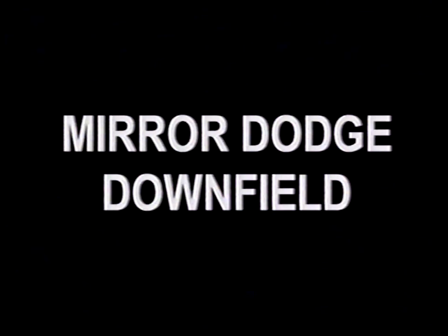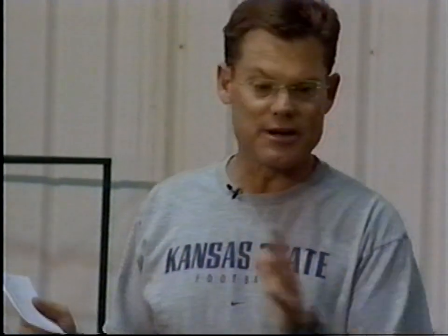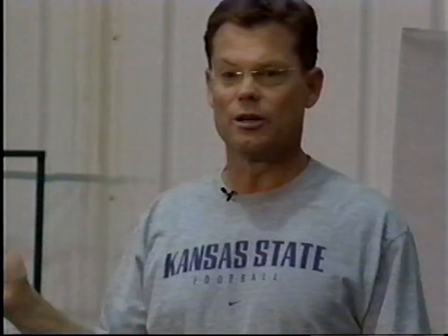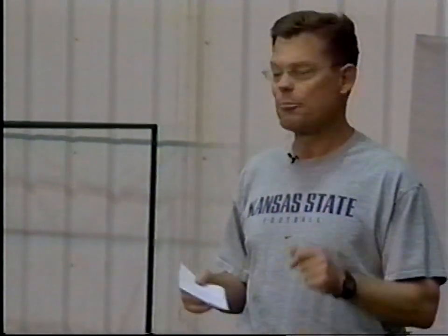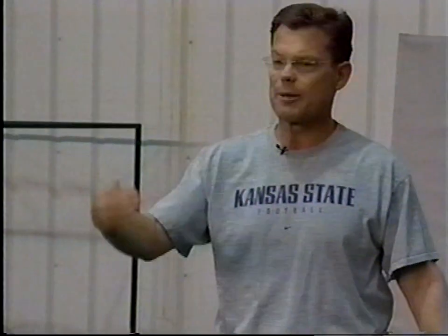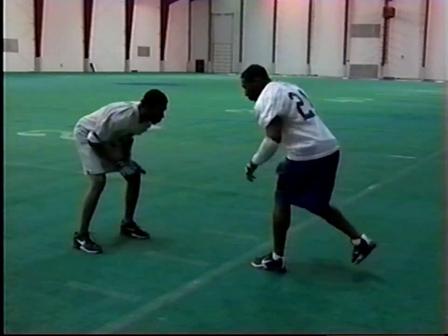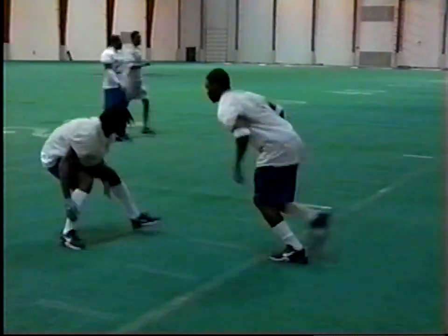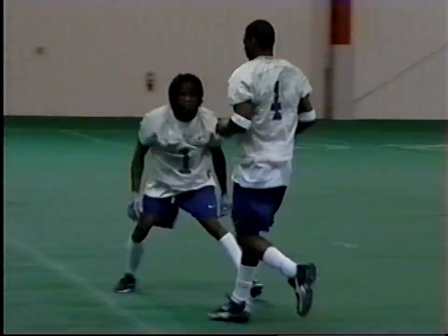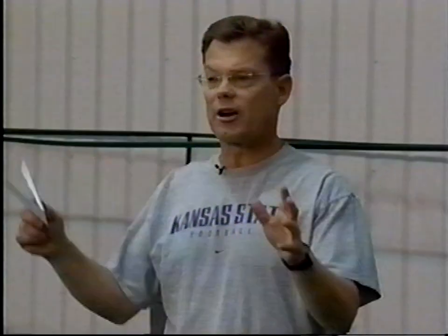The next drill is a mirror dodge drill working down the field at angles — working on this baby backpedal technique, trying to stay in front and opening our hips as we go down the field. Mo is going to use the mirror dodge drill but work at angles down the field, and Randy is going to shuffle, keep his feet apart, not using his hands to jam, but just using his feet to stay in front as Mo moves down the field. This is a good simulation of the body positioning of motor and mirror.